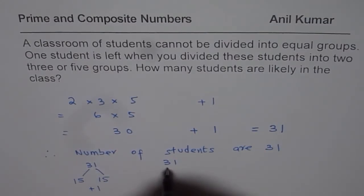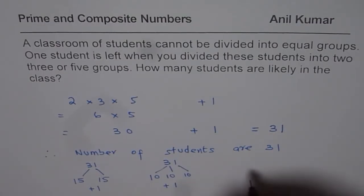Thirty-one, if you divide them into three groups, each group could be ten. Ten, ten and ten plus one.